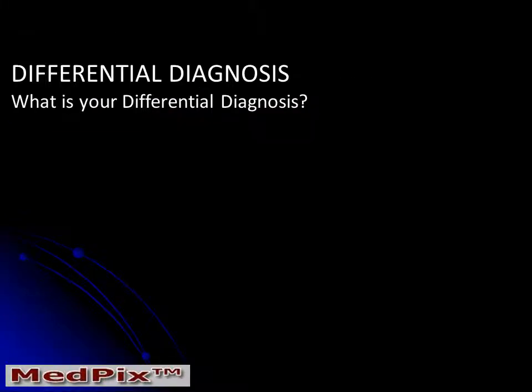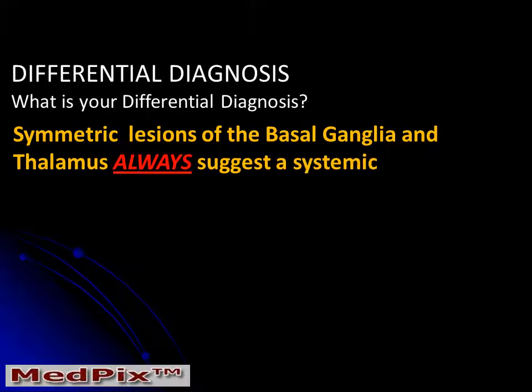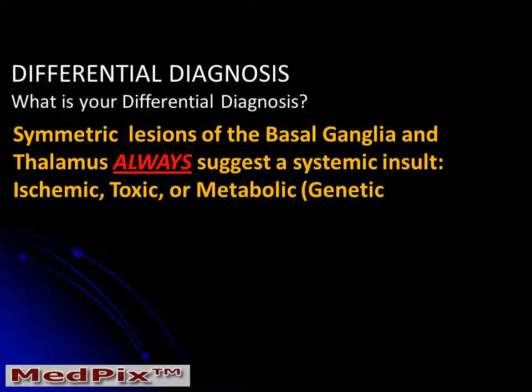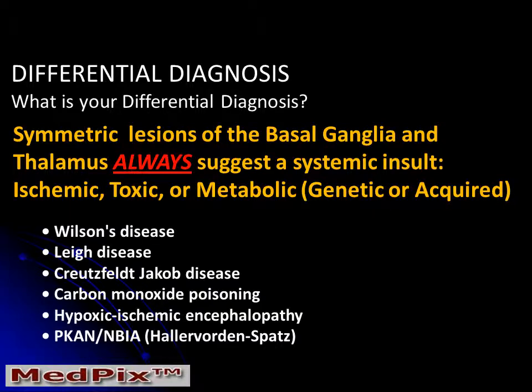What is your differential diagnosis? Symmetric lesions of the basal ganglia and thalamus always suggest a systemic insult, which may be ischemic, toxic, or metabolic, either genetic or acquired. The differential diagnostic list in this patient is long, but includes Wilson's disease, Leigh's disease, carbon monoxide intoxication, and Hallervorden-Spatz disease.